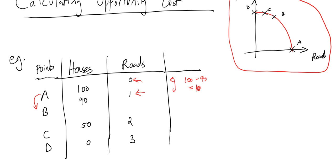If we repeat that for other points, as we move from point B to point C—from one road to two roads—that additional road costs 90 minus 50, which equals 40.